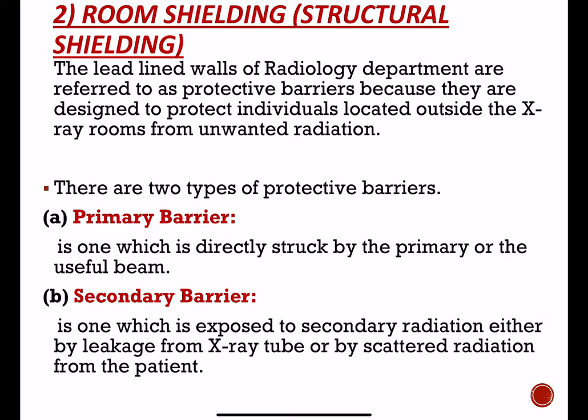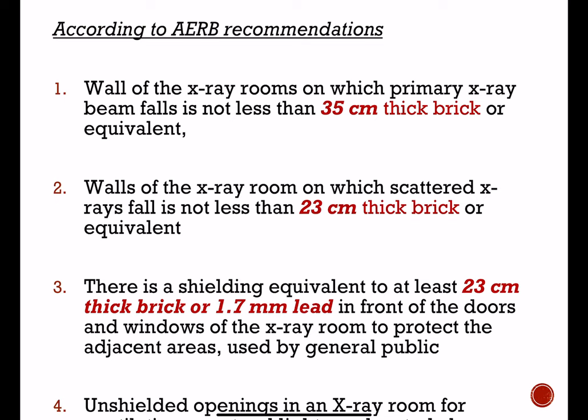Room shielding, also called structural shielding, involves shielding the walls and floor of the x-ray room. The lead-lined walls of the radiology department are referred to as protective barriers because they are designed to protect individuals outside the x-ray room from unwanted radiation. There are two types of barriers: the primary barrier, which is parallel to the x-ray source, and the secondary barrier, which is perpendicular to the x-ray source. The primary barrier has a lead equivalence of 1/16 inch and the secondary barrier is 1/32 inch.